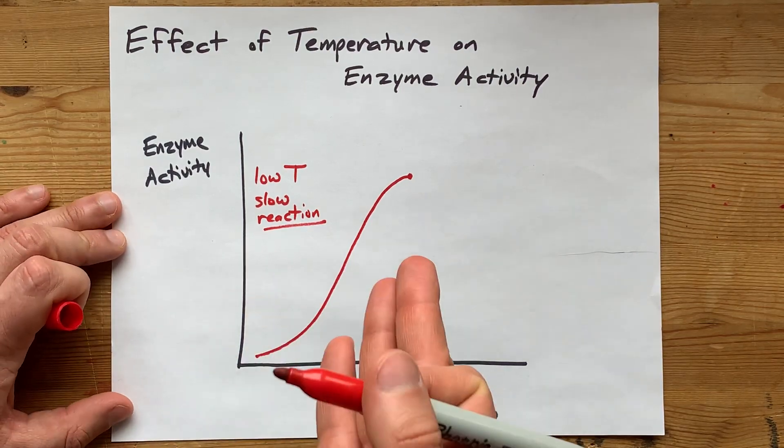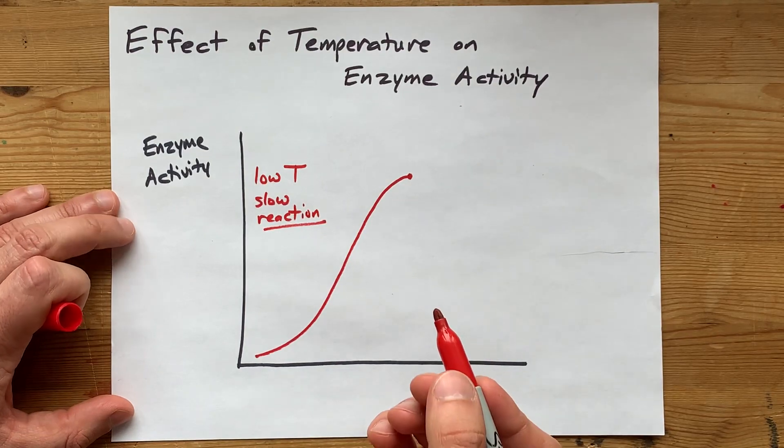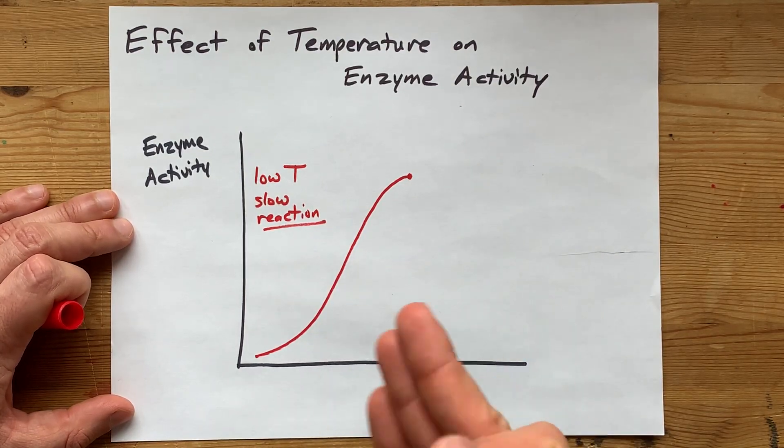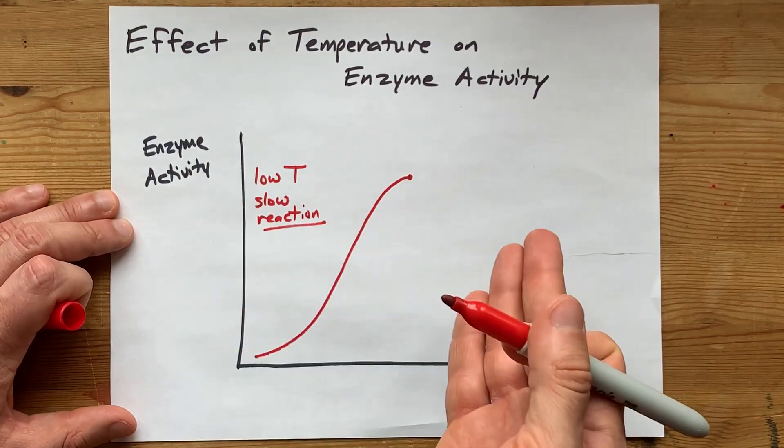Almost all reactions are slower at a low temperature, so this part of the enzyme activity curve should not be surprising. What you've been taught, though, is that chemical reactions speed up with temperature. Like, if the temperature goes up, the molecules are moving faster, so more of the collisions lead to a reaction.